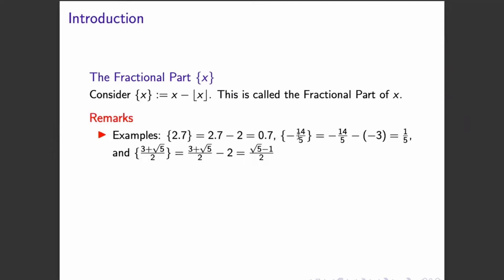For negative 14 over 5, we can remove the integer part, which is negative 3. So we get 1 fifth.